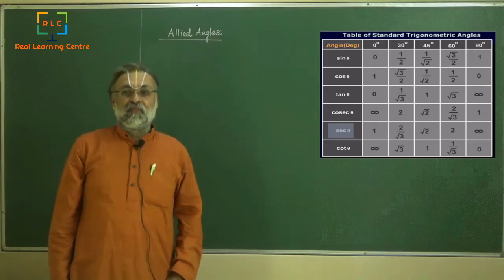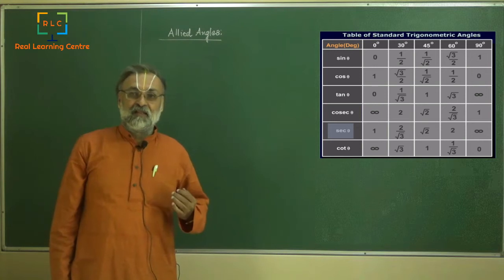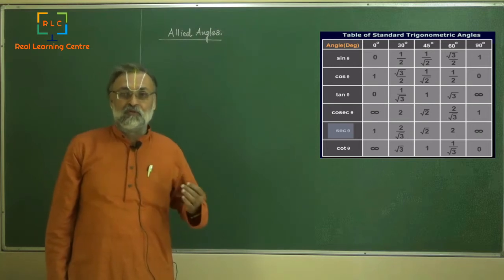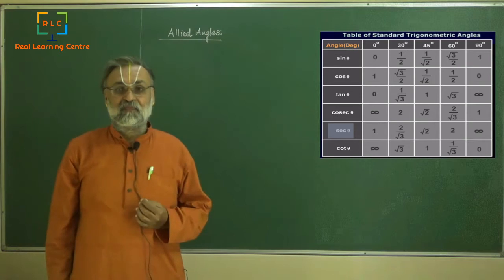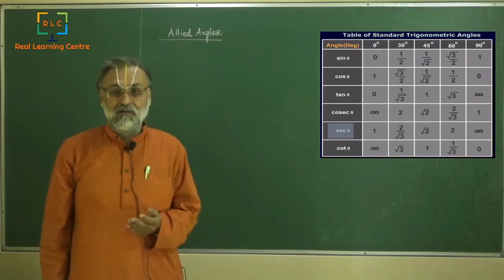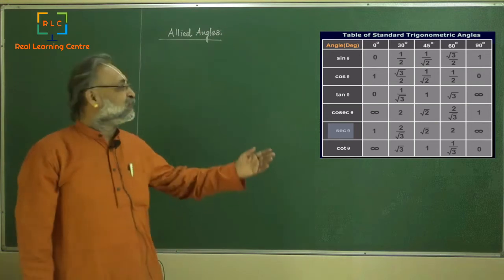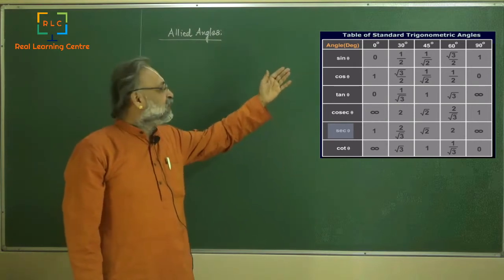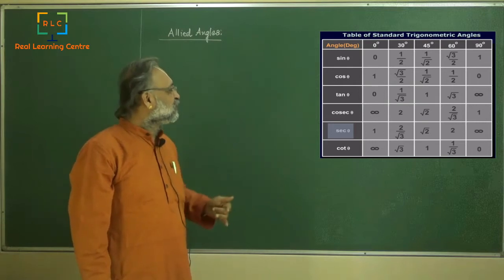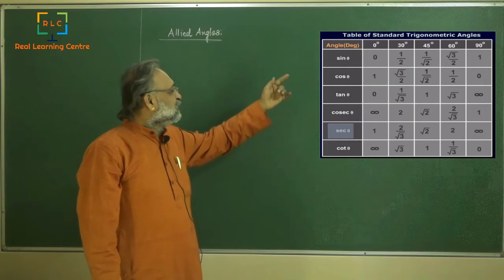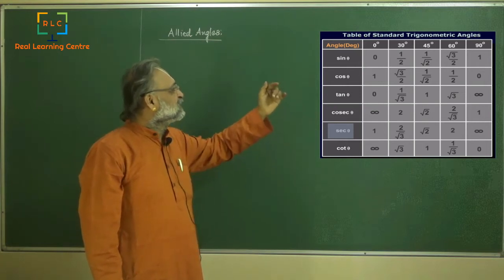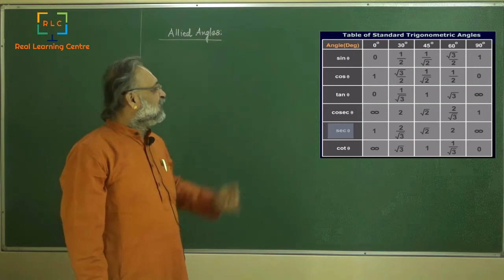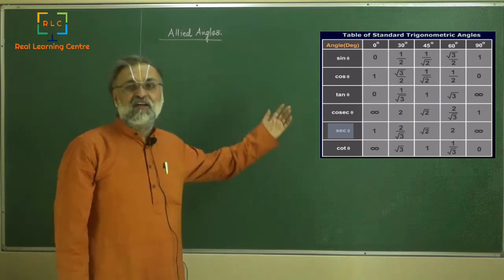Dear student, you have already studied the trigonometric ratios and you also know the standard angles. Let me make a quick recall of this table of standard angles. You see the angles and the trigonometric functions: 0 degrees, 30 degrees, 45 degrees, 60 degrees, 90 degrees, and you see the table of values there which I am just recalling for you.